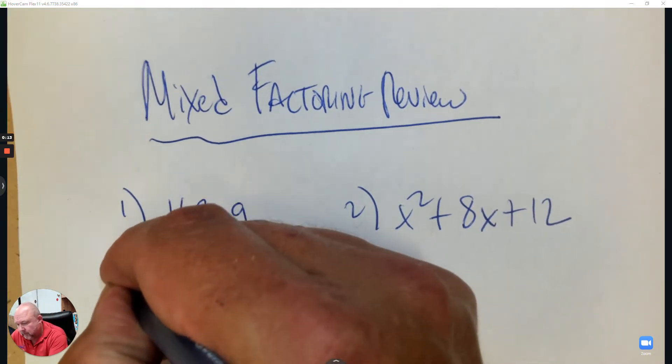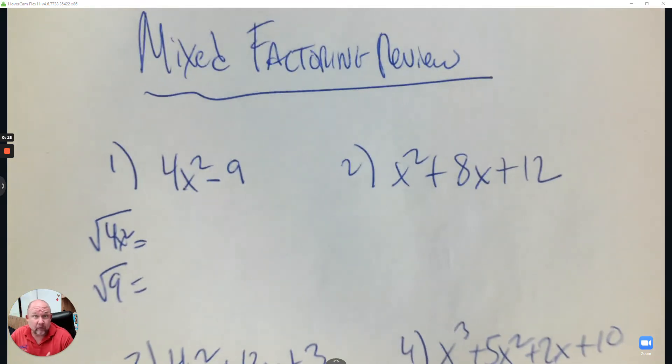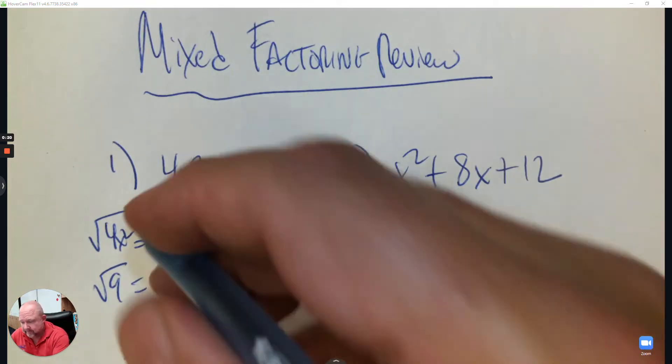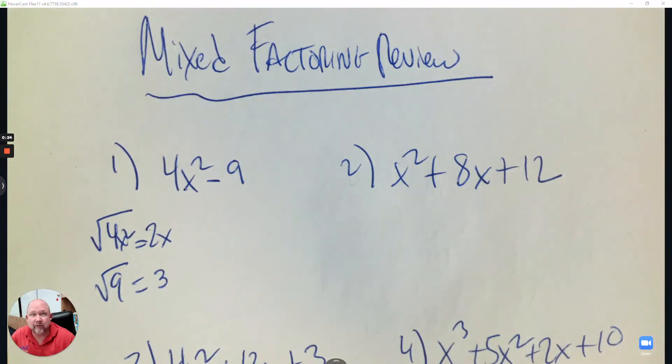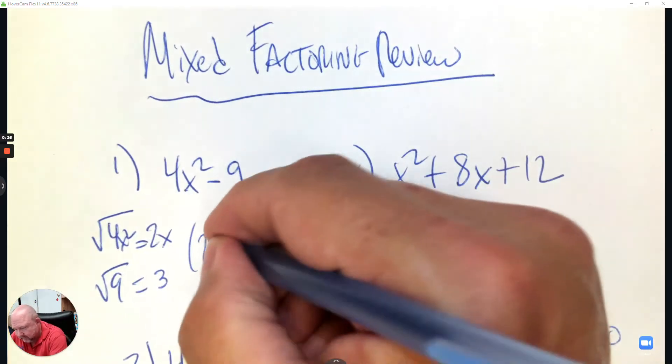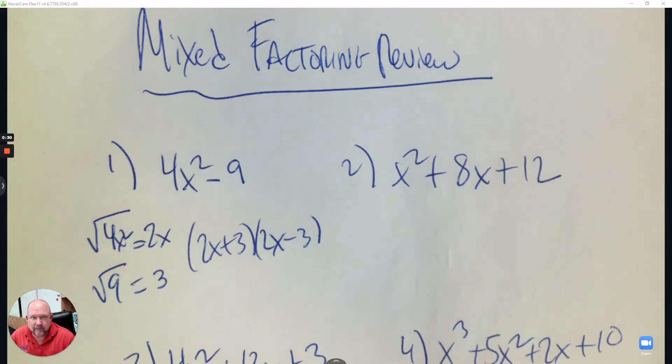So we're going to square root each term to begin with. So the square root of 4x squared is 2x, and the square root of 9 is 3. And then we write 2x plus 3 and 2x subtract 3.